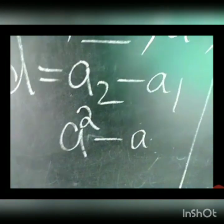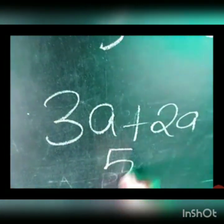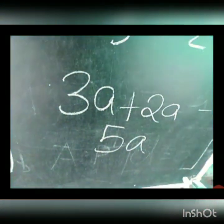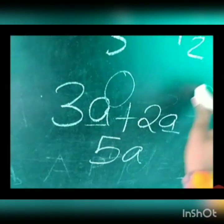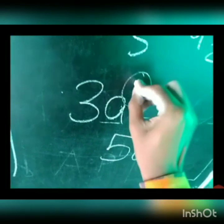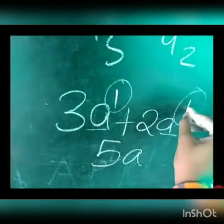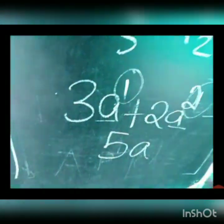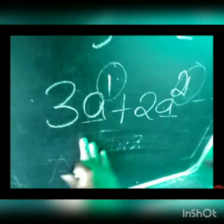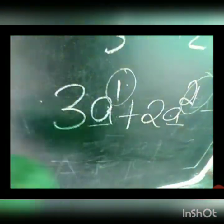This is very important: whenever we add or subtract a variable, two things must be checked. For example, in the previous case we were adding terms like 2a and getting 5a. But here we cannot add or subtract. For any variable to be added or subtracted, the variable must be the same AND their powers must also be the same. Here the power of the first term is 1 and the power of the second term is 2 — the powers are different, so you cannot simplify a² minus a.